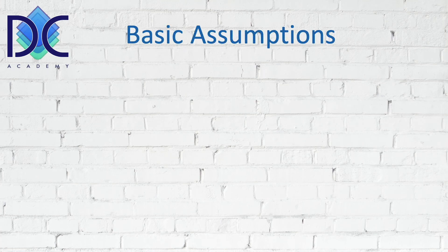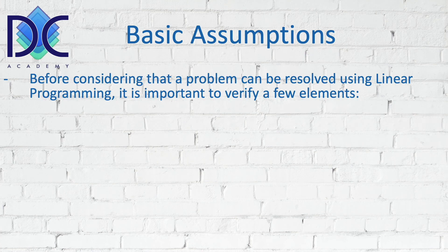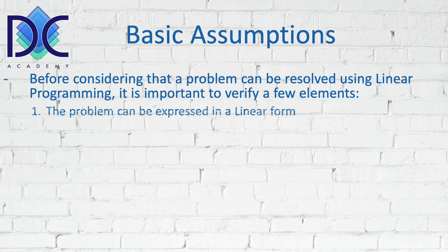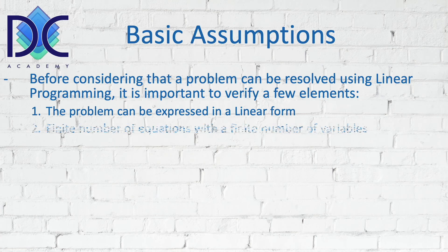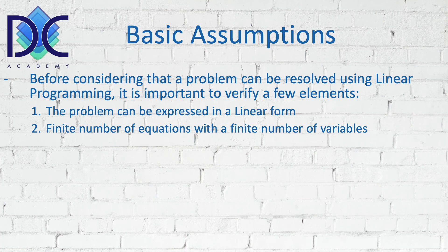Now let's look at the basic assumptions. Before we start dealing with linear programming, we have to be sure these assumptions are met. First of all, the problem can be expressed in a linear form — a linear equation or linear inequality that expresses the constraints. If it's not linear, we cannot use it. We are also limited to a finite number of equations and a finite number of variables. It doesn't mean they cannot be large — we can have 70 equations and 70 variables — but they have to be finite.